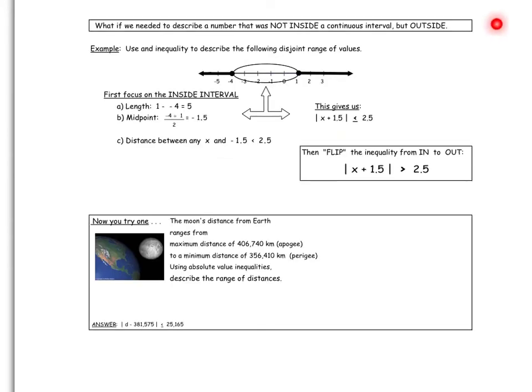If we needed to describe a number that was not inside the continuous interval, but rather outside the range of values, we would have to first analyze the section in the middle, because the section in the middle anchors the sections on either side of it. So we're going to do the exact same analysis we did before. We're going to focus on the inside interval, finding its length, which is 5.